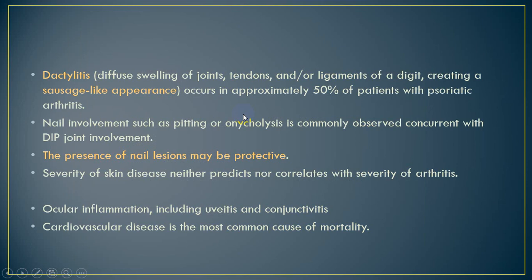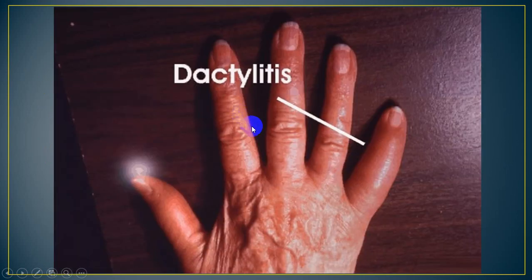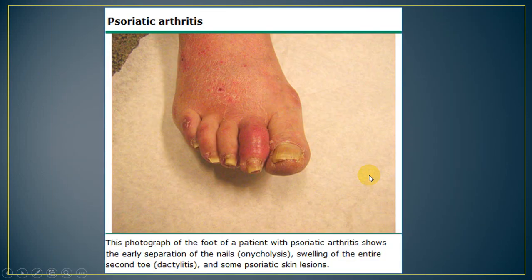Another feature is dactylitis, which is diffuse swelling of the joints, tendons, and/or ligaments of all the digits — either fingers or toes — creating a sausage-like appearance. Dactylitis usually occurs in approximately 50% of patients with psoriatic arthritis.